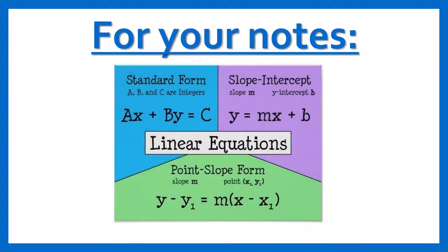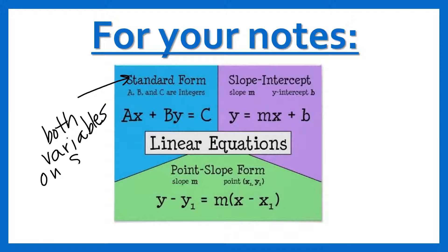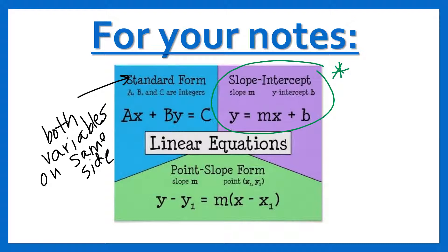This last slide to have in your notes is about different types of linear equations. Standard form is when we have Ax + By = C — both variables are on the same side. Slope-intercept form is one of our most popular and important forms: y = mx + b, keeping in mind that m is the slope and b is the y-intercept — that's like your initial value. Initial value is the same thing as y-intercept.